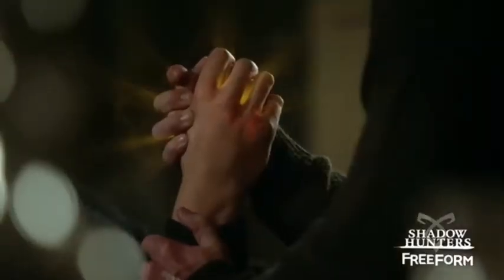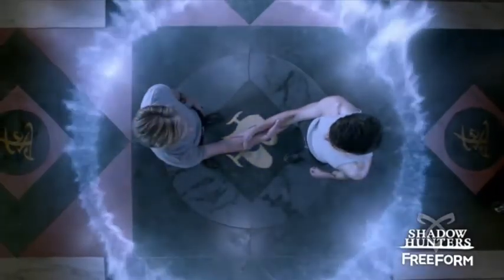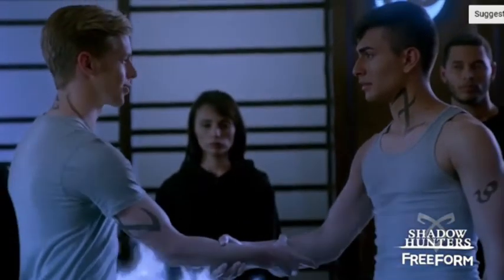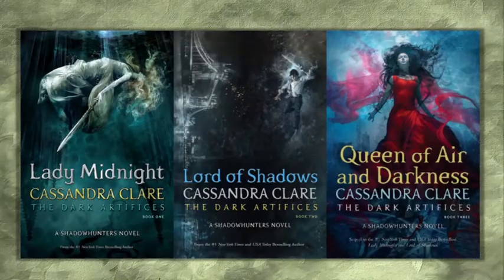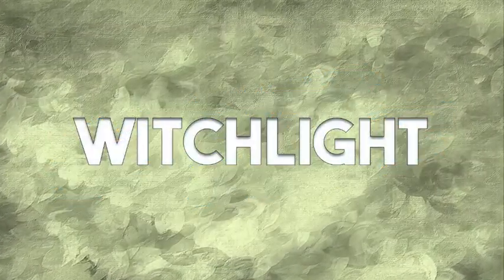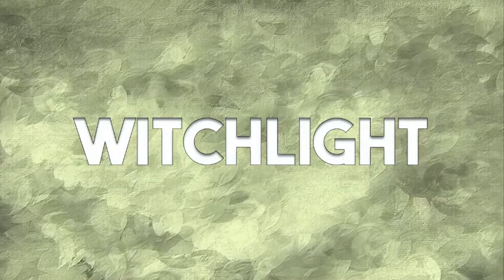The ninth term, Parabatai. Parabatai is a term used among Shadowhunters — this makes two Shadowhunters bond and fight for each other. They swear an oath to protect each other for the rest of their lives, but they can never fall in love romantically with each other. I'm not going to say why because that will definitely spoil you for the Dark Artifices trilogy, which is the sequel to the Mortal Instruments. The tenth term is Witchlight. Like the Stele, Witchlight is quite a basic thing in the Shadow World — it's basically a rock used by Nephilim for light.